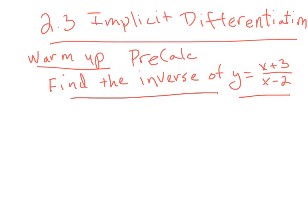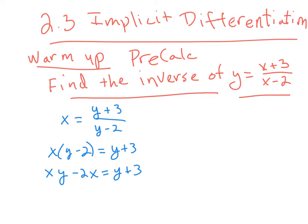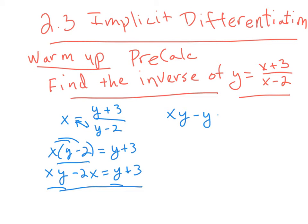We want to find the inverse of y equals 2x plus 3 over x minus 2. We're not doing inverses in this section, but the algebra will help you with implicit differentiation. So switch x and y and solve for y. I hope many of you got to this stage — I cross-multiplied to get x times (y minus 2), then distributed. Now we want to solve for y. I have a y term here and a y term here, so bring all y terms to one side: xy minus y equals 2x plus 3.